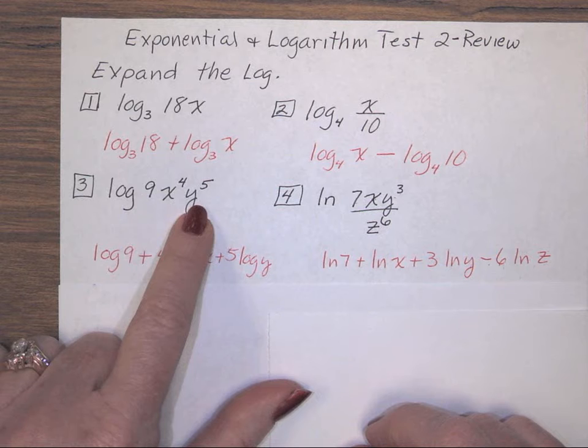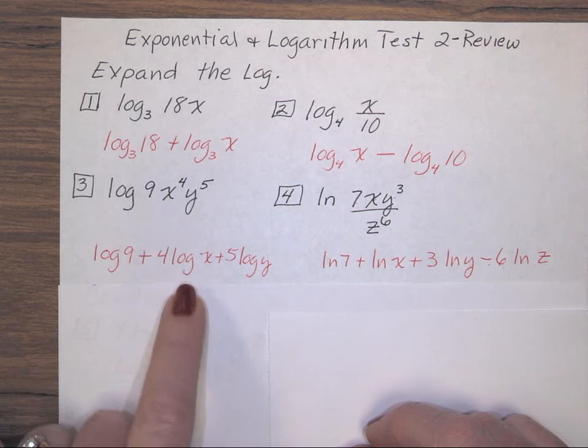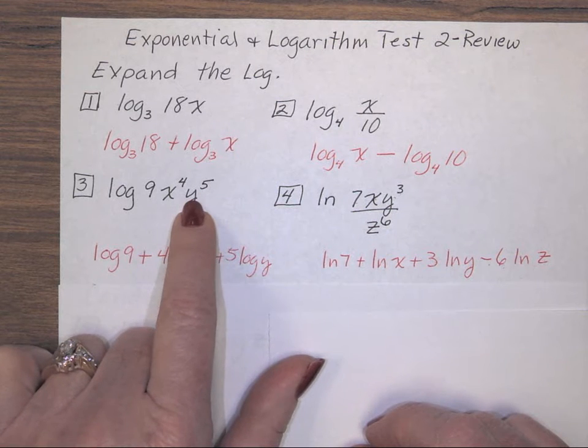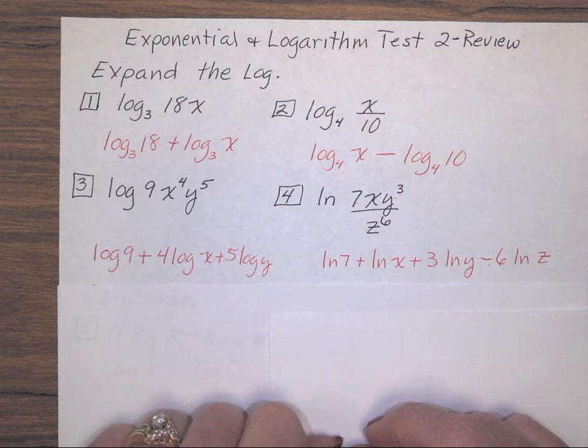Remember, we wrote separate logs, and then the exponent of 4 is on the x only. It becomes the coefficient for the log containing x only. The exponent of 5 is on the y only. It becomes the coefficient for the log containing y only.